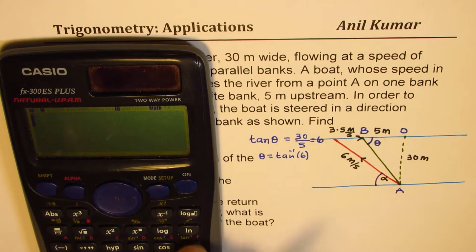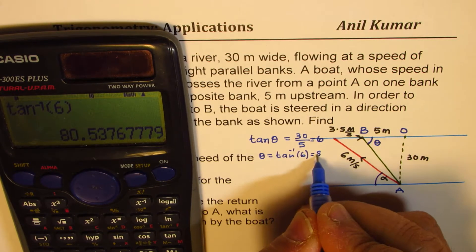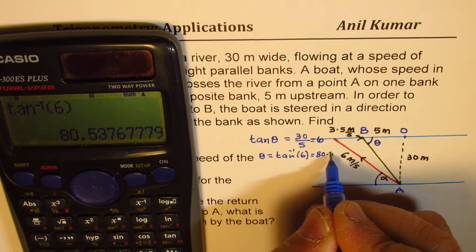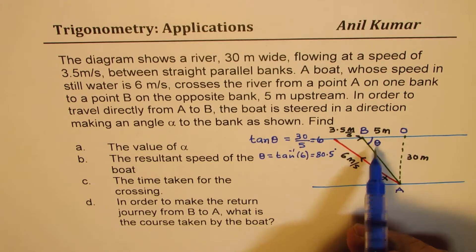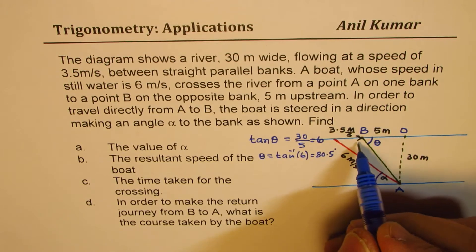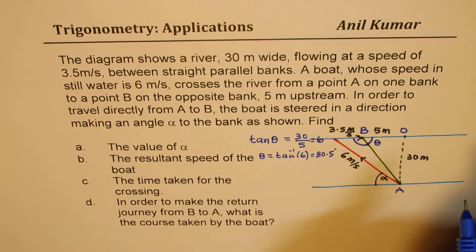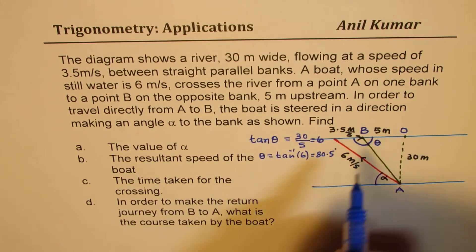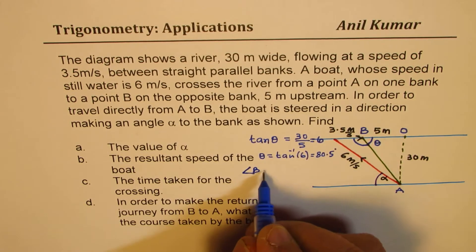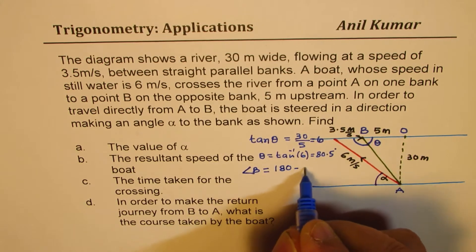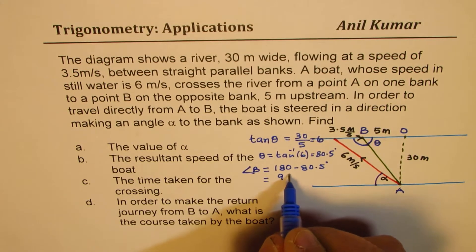Shift tan inverse of 6 gives us 80.53 degrees, so we'll keep it as 80.5 degrees. Once we know angle theta, we can find the angle on the other side. Let's call it angle B. The bigger angle B is 180 minus 80.5 degrees, which gives us 99.5 degrees.